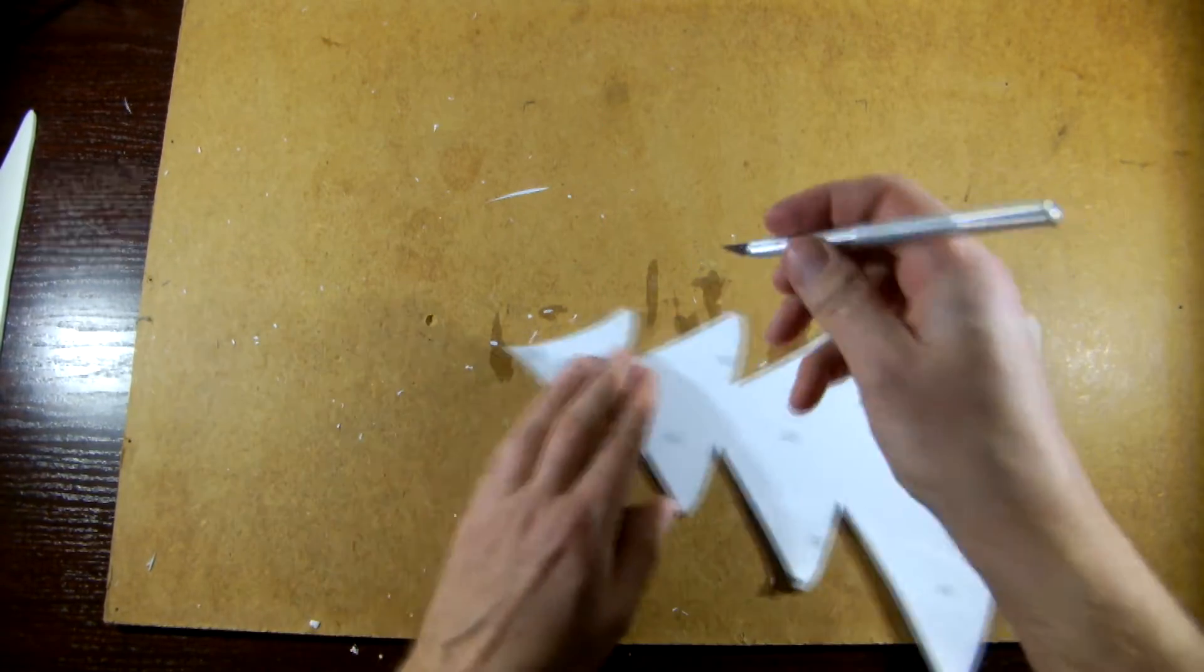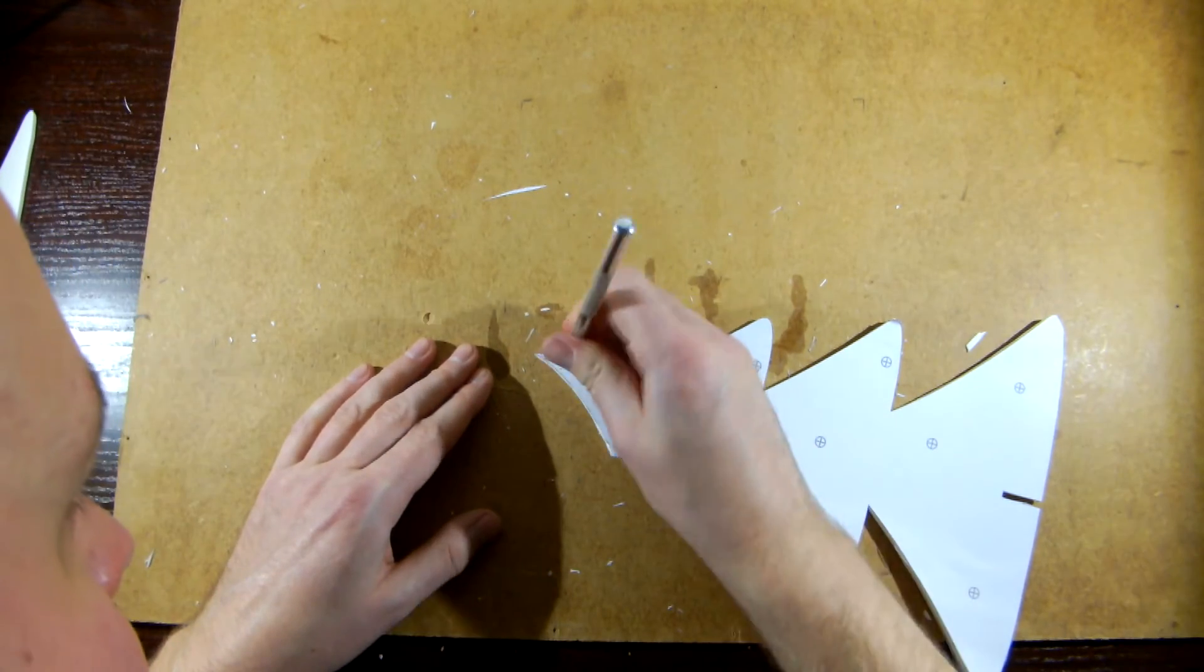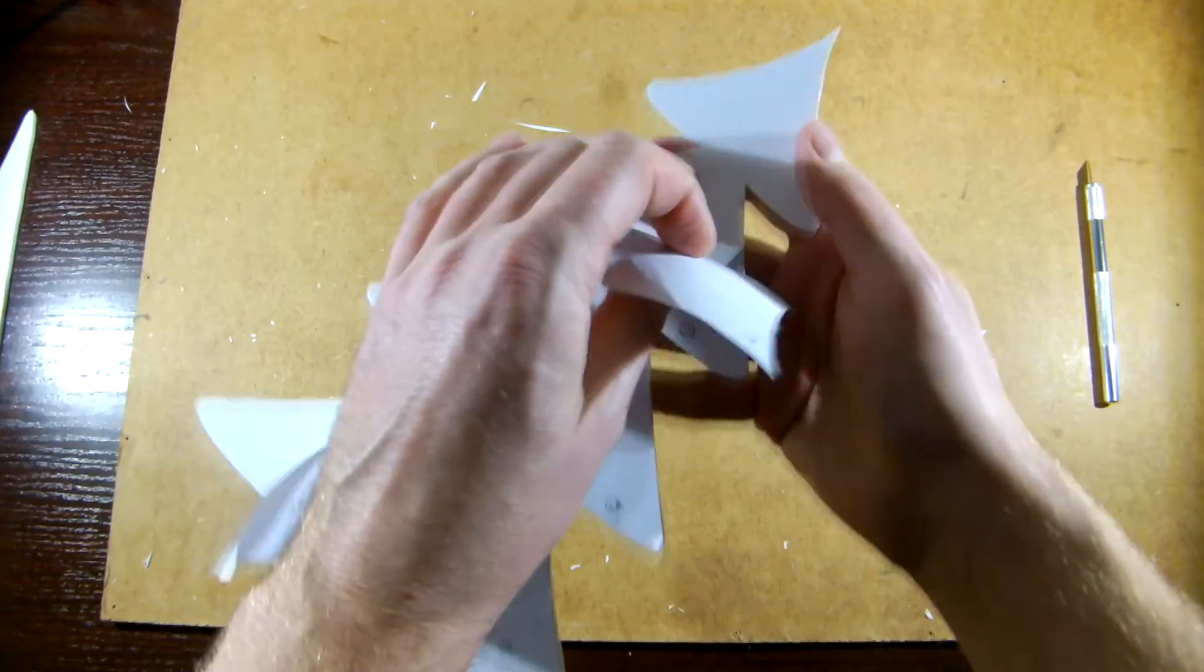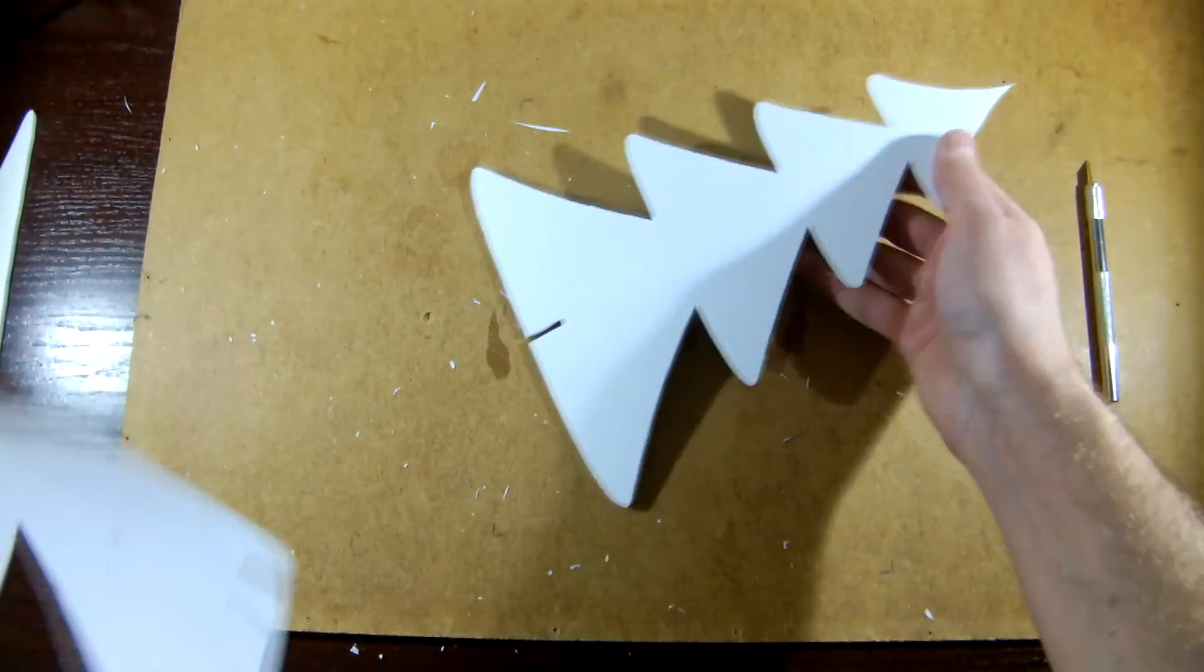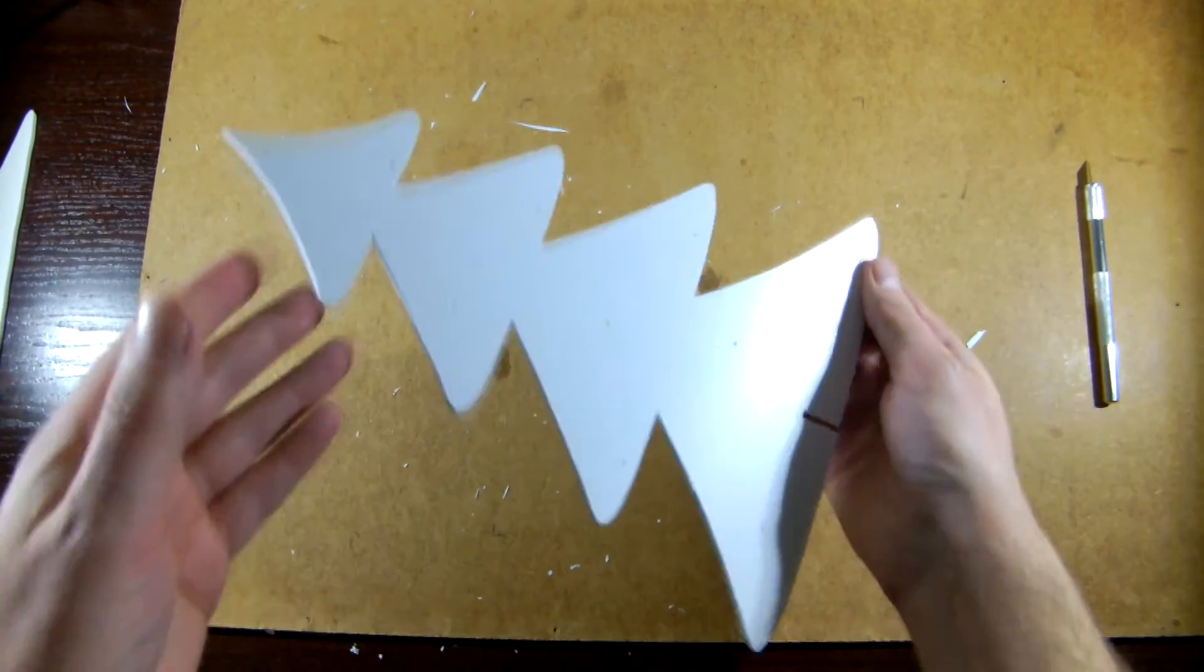Mark the holes for LEDs before you peel off the paper template. All the glue should stay on paper and the board should be nice and clean.